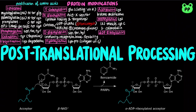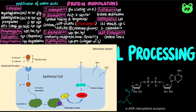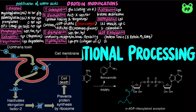ADP ribosylation is also the basis for various toxins, such as cholera toxin, which catalyzes ADP ribosylation of G protein, resulting in continuous cAMP production, as well as diphtheria toxin, which facilitates ADP ribosylation of the diphthamide residue of eukaryotic elongation factor 2, inactivating translocation during eukaryotic translational elongation.